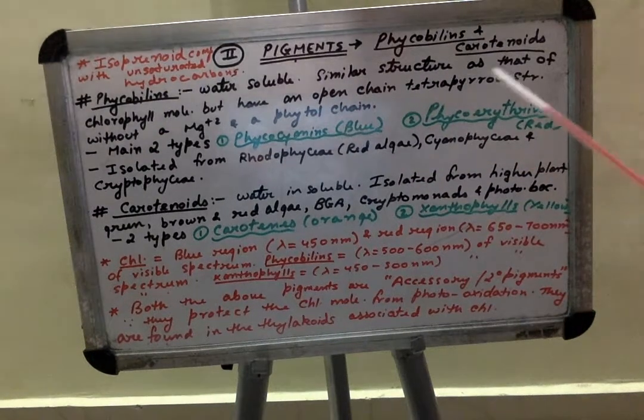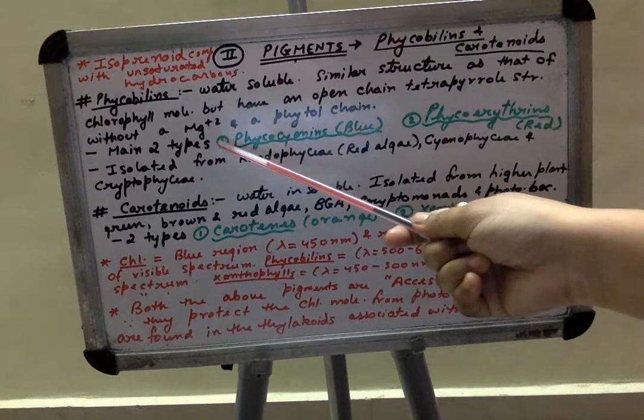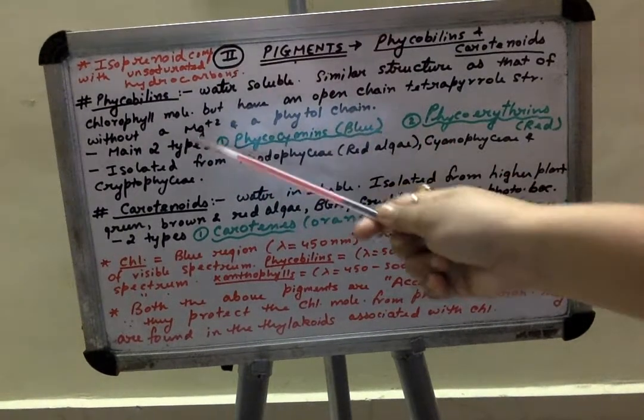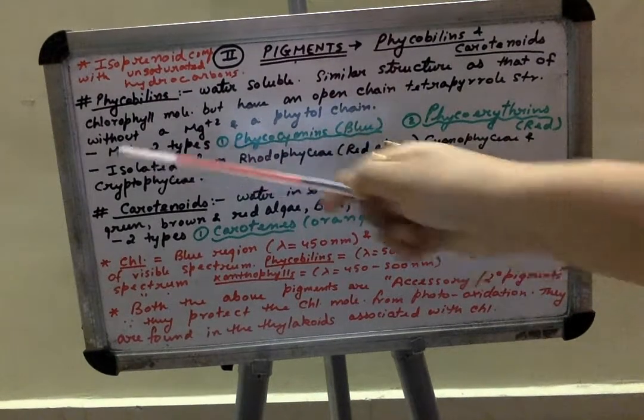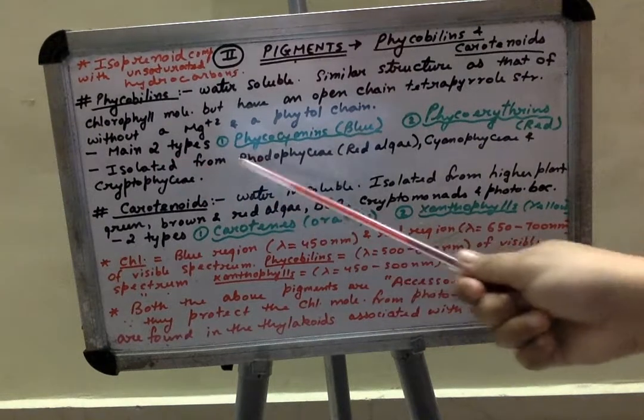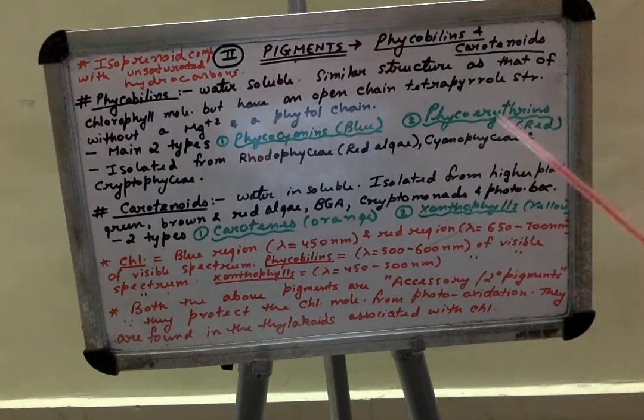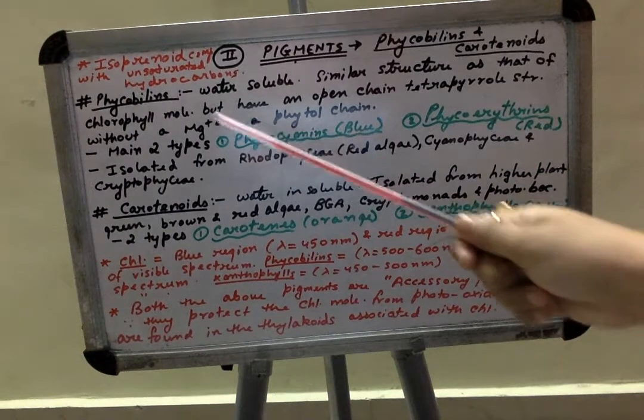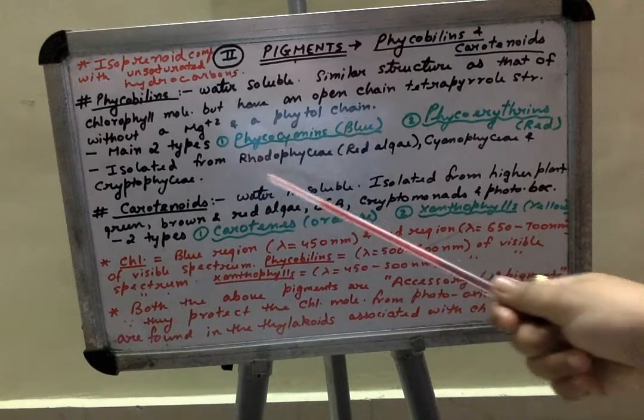The tetrapyrol structure is open in nature without a magnesium ion present in the center and without a phytol tail. There is no magnesium ion and no phytol chain in case of phycobilins. The two main types of phycobilins are phycocyanin, blue in color, and phycoerythrin, red in color. These two pigments are isolated from rhodophyceae.